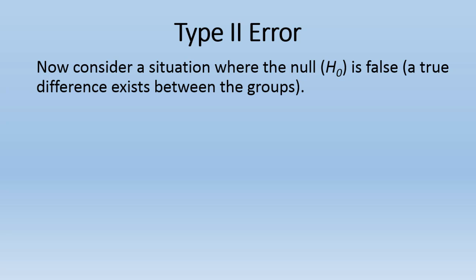Now let's consider a situation where the null is false, so a true difference exists between the groups.